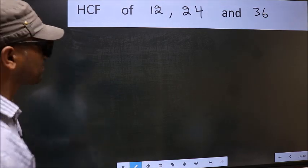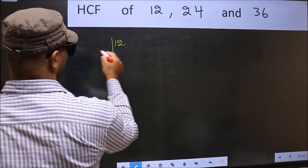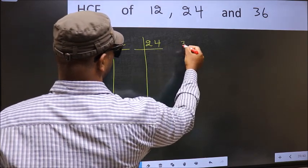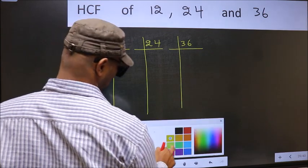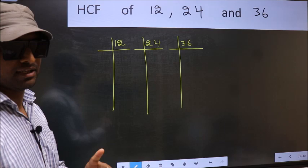What I mean is 12, 24, 36. This is your step 1. Next.